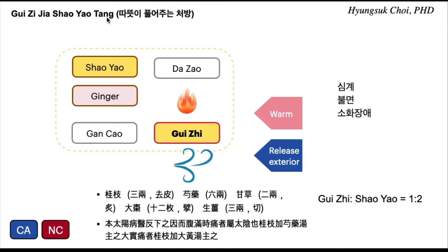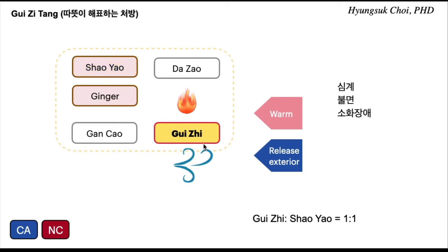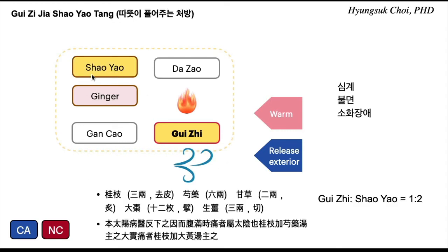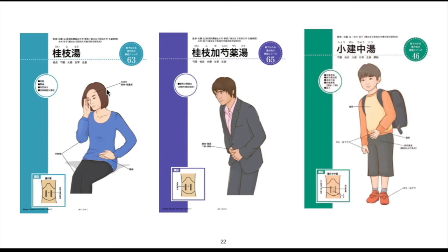So when do you use gui-ji-jia-xiao-yao-tang? Gui-ji-tang with xiao-yao — when do you use them? Gui-ji-tang is for cold and exterior conditions; you can release them by warming with gui-ji and ginger. Gui-ji-jia-xiao-yao-tang is warming and releasing, softening. So gui-ji-tang is for cold, headache, chills and fever. But gui-ji-jia-xiao-yao-tang is for abdominal pain, stomach ache.